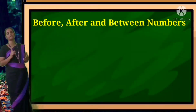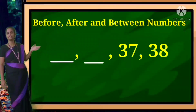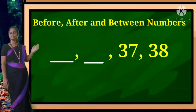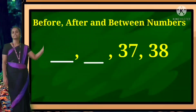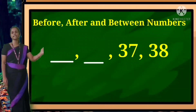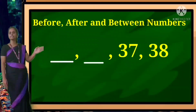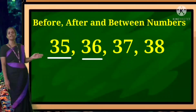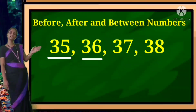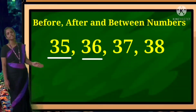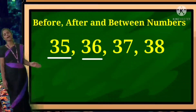We will give you the dashes and you have to write the number. Example: dash, dash, thirty-seven, thirty-eight. Before thirty-seven comes thirty-six. Before thirty-six comes thirty-five.